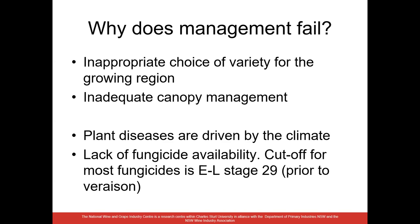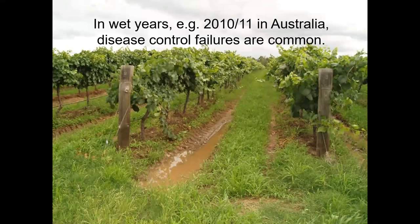However, the last two factors — climate and lack of product availability — we have very little control over. Most fungicides cannot be sprayed after EL stage 29, just prior to veraison, according to the AWRI doc book. In wet years such as 2010-11, no matter how good management practices were, you're going to get bunch rots anyway. In that picture you can see pockets of water in the vineyard, lots of lush green growth due to rain, immediately prior to harvest — making it difficult even to get a machine harvester into the vineyard.